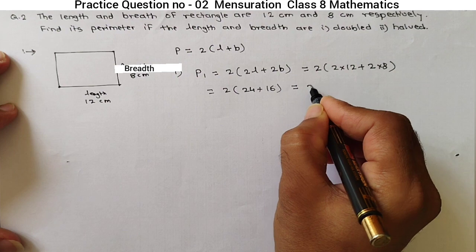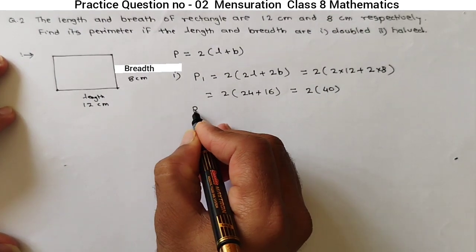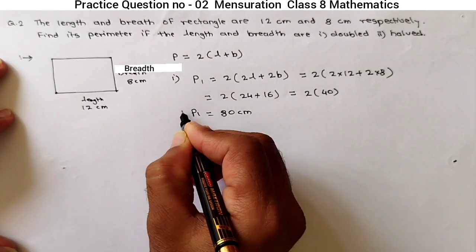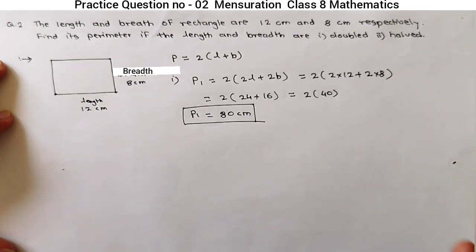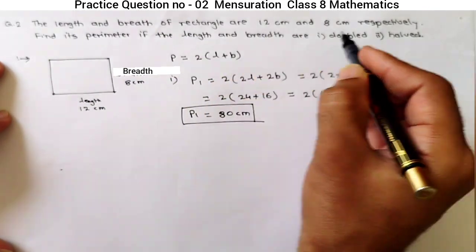Then, further 2 into bracket 24 plus 16 is 40 and our answer will be P1 is equal to 80 cm. So, this will be the first answer when length and breadth are doubled.